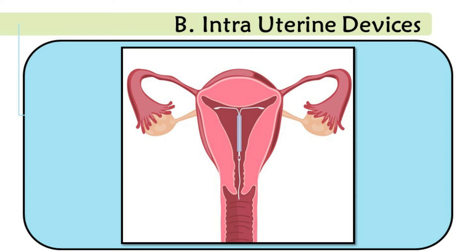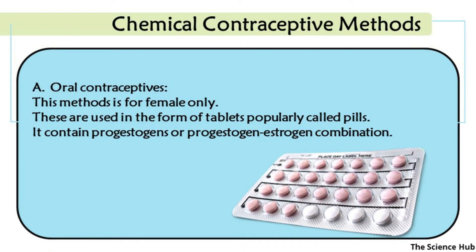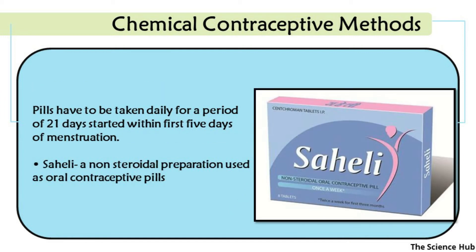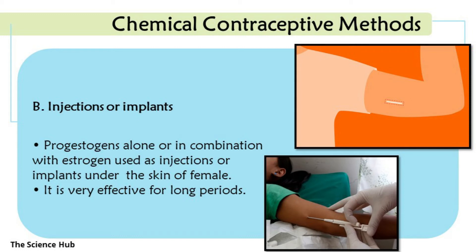Chemical contraceptive methods include oral contraceptives, for females only. These are tablets called pills, containing progestogens or a progesterone-estrogen combination. Pills must be taken daily for a period of 21 days, started within the first five days of menstruation. One example is Saheli, a non-steroidal preparation used as an oral contraceptive pill.